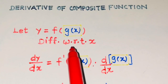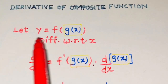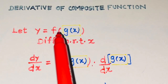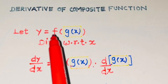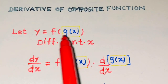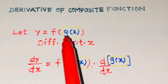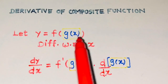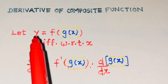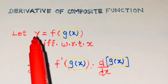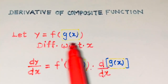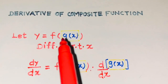Now the question is, why is it a composite function? It's very simple. In general, the function is denoted by f of x. In this, x is replaced by some new function, that is g of x, and that is why it becomes a composite. In simple language, I assume y is equal to f of box — box means your new function.